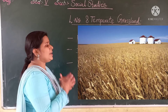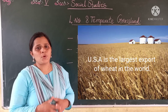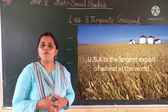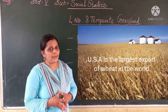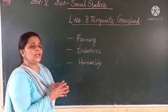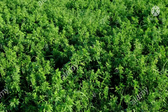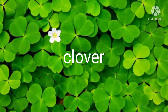USA is the largest exporter of wheat in the world. Special grasses such as alfalfa and clover are grown as fodder for animals.